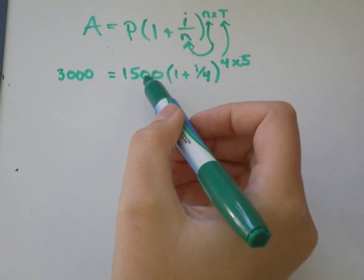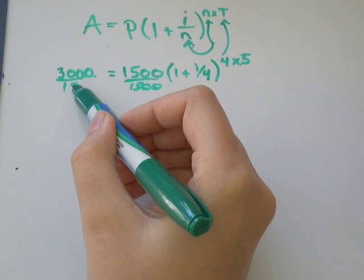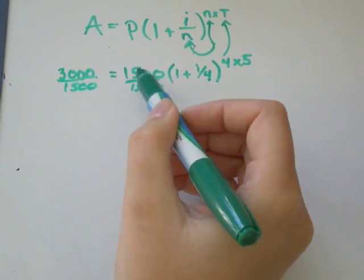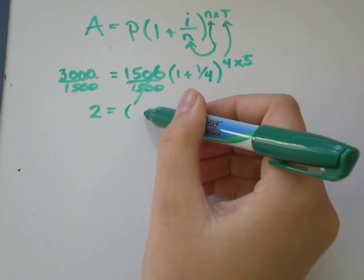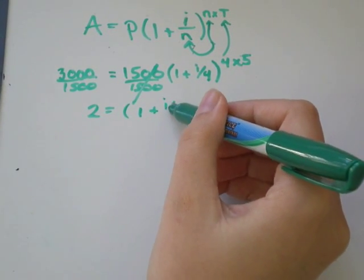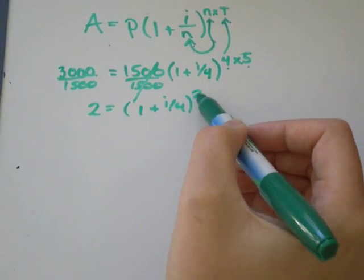So the first thing we can do is divide both sides by $1,500. $3,000 divided by $1,500 would be 2. Those will cancel out, and I'll be left with 1 plus i over 4 to the exponent of 4 times 5 would be 20.